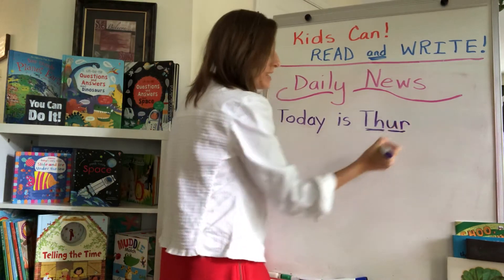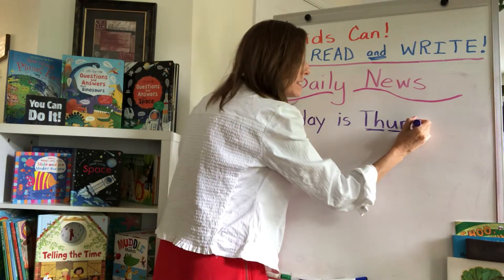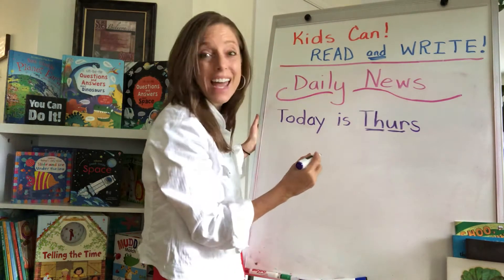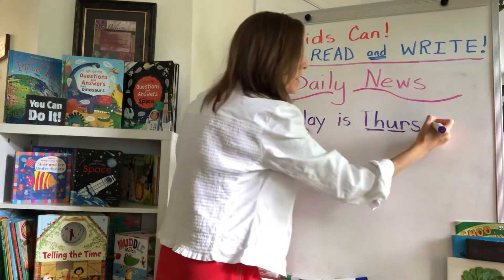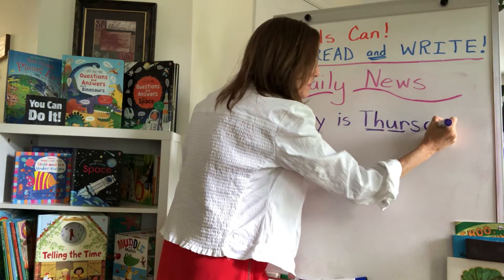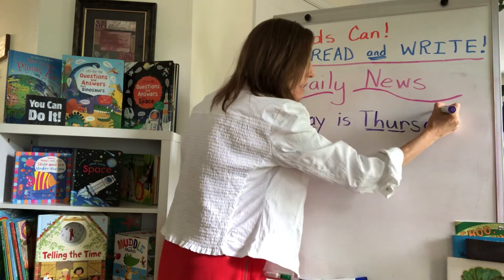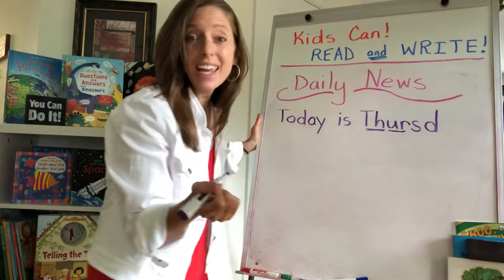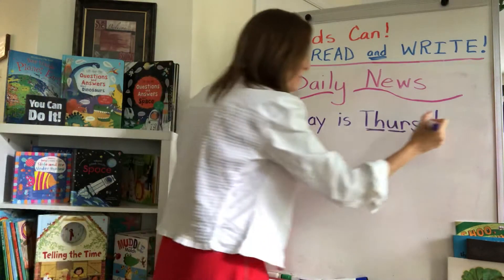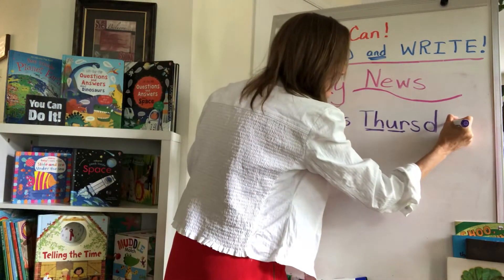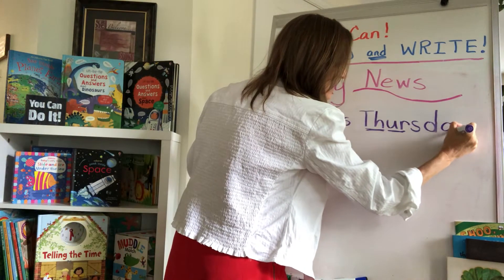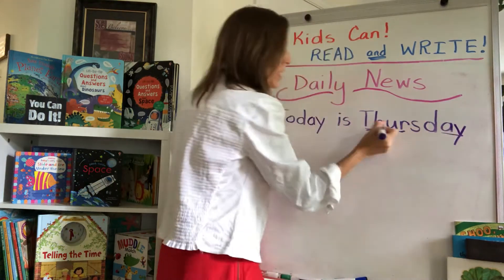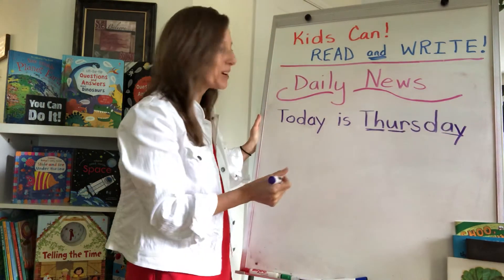There's our second trick. THURS — put our snake — THURS. Da A. Remember, daddy's face first for those D's, then put the ladder. And what says A at the end of a word? A-Y. That's our next trick. So we have one, two, three tricks in that word.